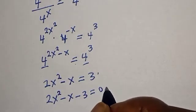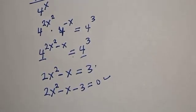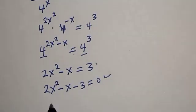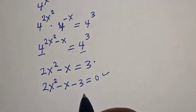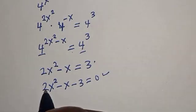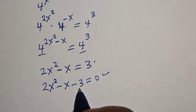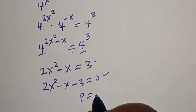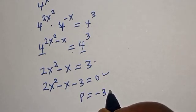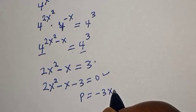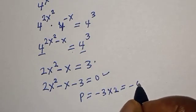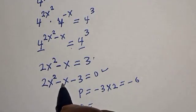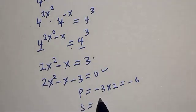So 2s squared minus s minus 3 is equal to 0. This is a quadratic equation. Let's solve this using the factorization method. The product is: multiply 2 by minus 3, that will be minus 6. So P equals minus 6. The sum is the coefficient of s, which is minus 1, that is minus 3 plus 2 equals minus 1.